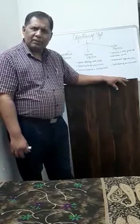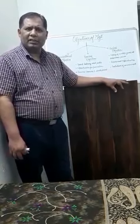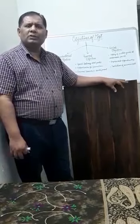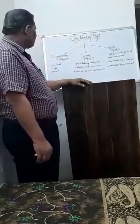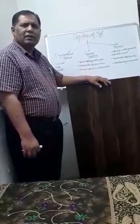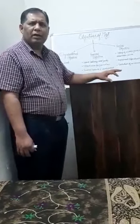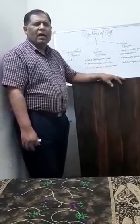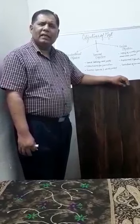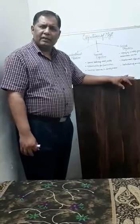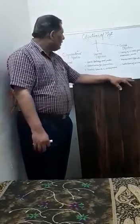We should try to understand the requirements, tastes, and liking of the employees if we really want to survive for a long period. Under personal objectives we have three types. The first point is good salary and perks. A reasonable amount of salary should be given to employees, and we can compare the salary of our organization with neighboring industries so that labor turnover is reduced.